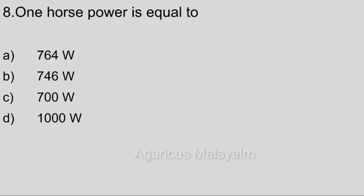Eighth question. One horsepower is equal to. Answer options. Option A: 764 watt. Option B: 746 watt. Option C: 700 watt. Option D: 1000 watt. Correct answer: Option B, 746 watt.